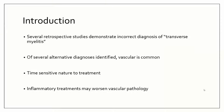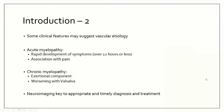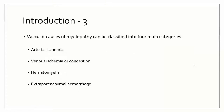Today we're going to spend some time talking about vascular etiologies because they're very time sensitive, and because treatment for transverse myelitis in general may actually worsen the pathology of vascular etiologies. We'll discuss clinical features that suggest vascular etiologies, acute myelopathy, chronic myelopathy, and key neuroimaging findings which will help in diagnosis and treatment.